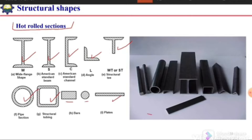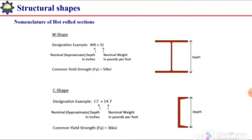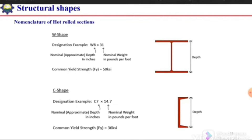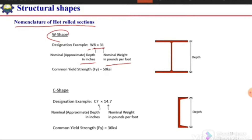The question is how we designate these sections. For the W section, we use the letter W followed by two numbers: the first number corresponds to the depth of the section and the second number corresponds to the weight per unit length. In the FPS system, depth is in inches and weight is in pounds per foot.